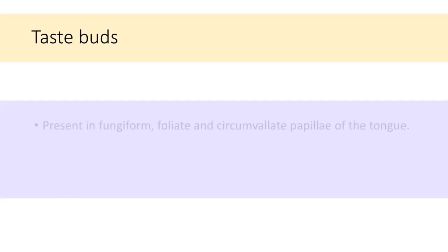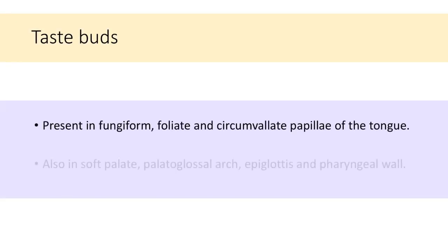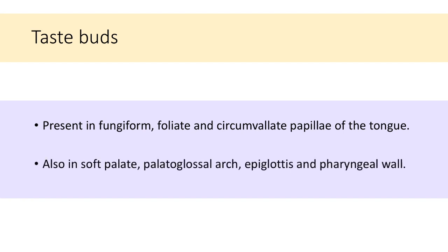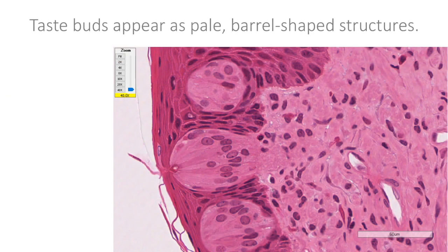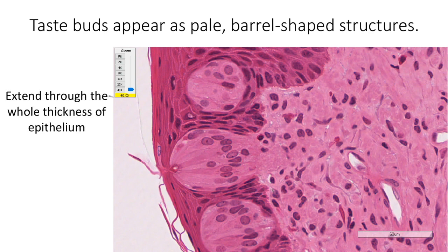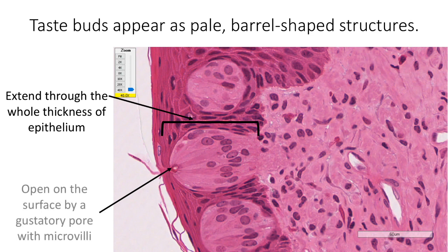Taste buds are present in the fungiform, foliate, and circumvallate papillae of the tongue. They are also found in the soft palate, palatoglossal arch, epiglottis, and pharyngeal wall. Taste buds appear as pale, barrel-shaped structures that extend through the entire thickness of the epithelium. They open to the surface by a gustatory pore, which contains microvilli of the taste bud cells.